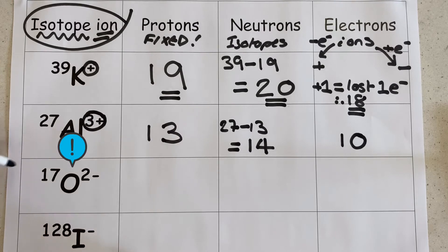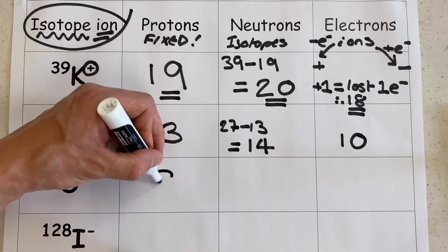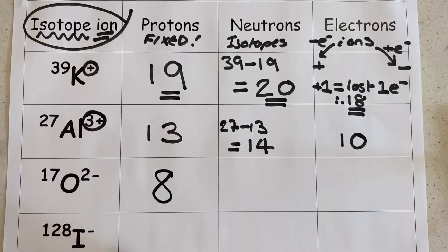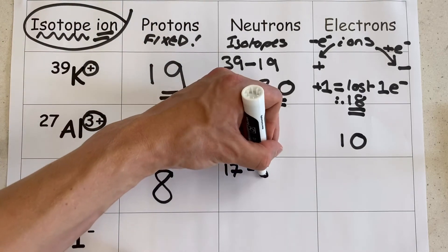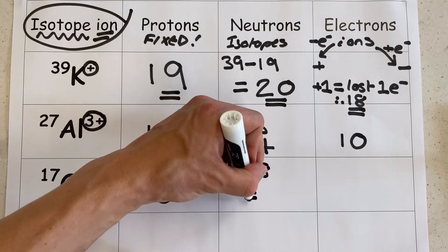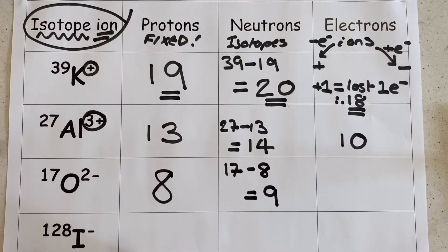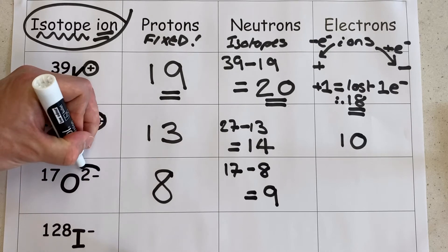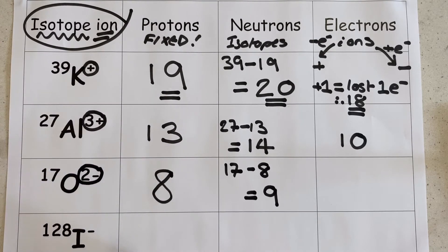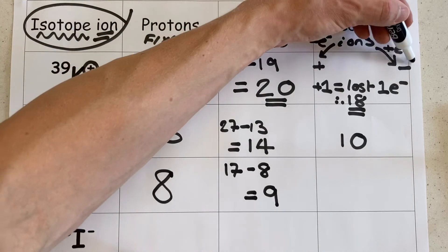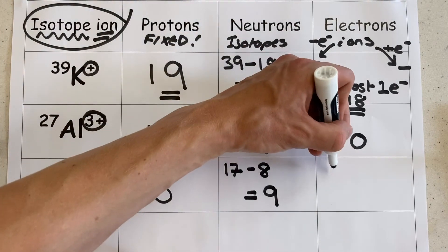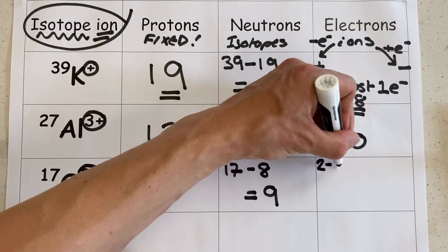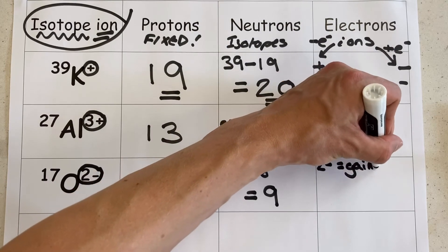We can also do this for negative ions, like this oxygen 2- anion. The periodic table tells me that there are 8 protons in this particular isotope of oxygen — that number is fixed. And the number of neutrons can be calculated in the same way as before, as 9. The number of electrons — well, it's got a 2- charge, and negative ions have gained electrons. Specifically here, it must have gained 2, and so that means there are 10 electrons on this particular ion of this oxygen isotope.